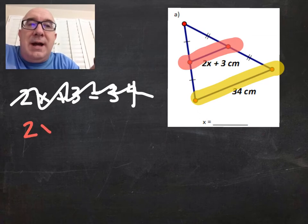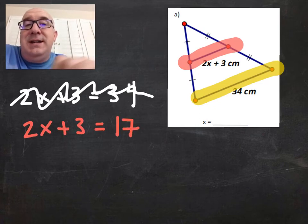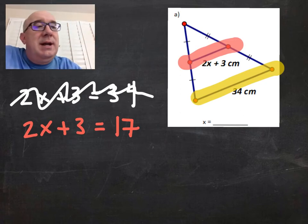You could say 2x plus 3 has to equal 17, because that's half of 34. That's one way to do it and solve it.